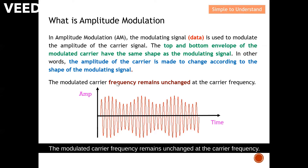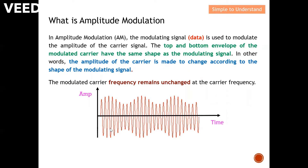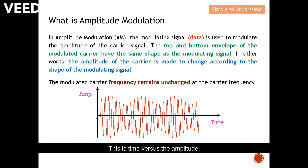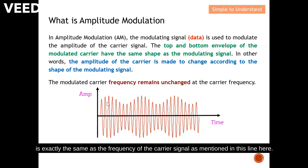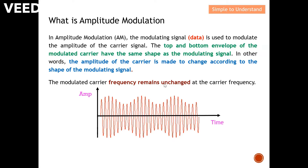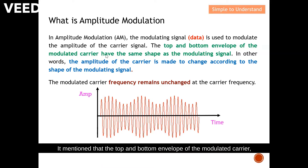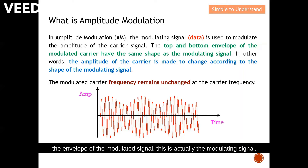The modulated carrier frequency remains unchanged at the carrier frequency. Let's take a look at this diagram. This is a modulated signal — time versus amplitude. From this diagram, you can see that the frequency of the modulated signal is exactly the same as the frequency of the carrier signal, as mentioned in this line here. The top and bottom envelope of the modulated carrier have the same shape as the modulating signal, which means that the envelope of the modulated signal is actually the modulating signal, which I'll illustrate on the next few slides.